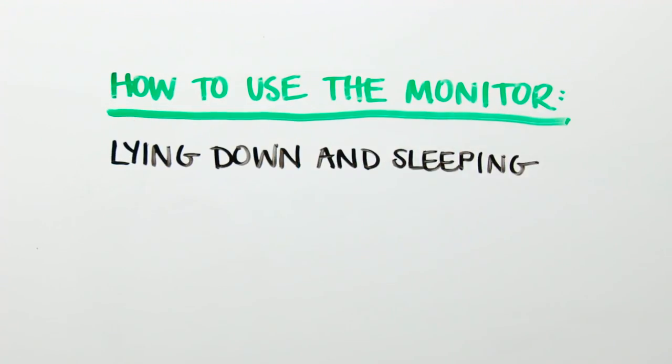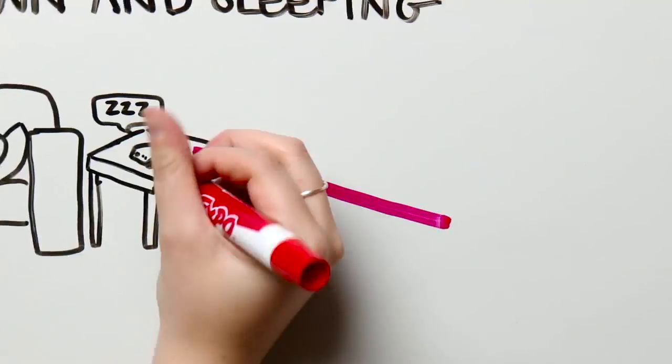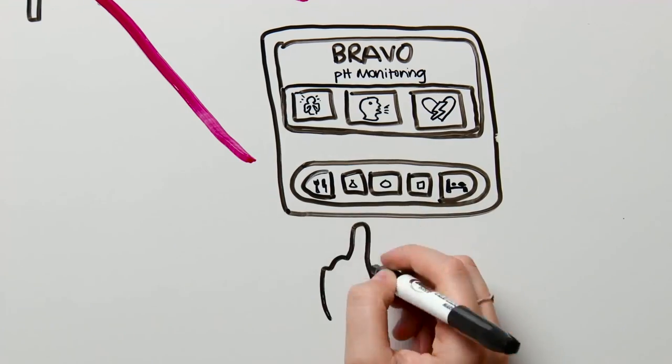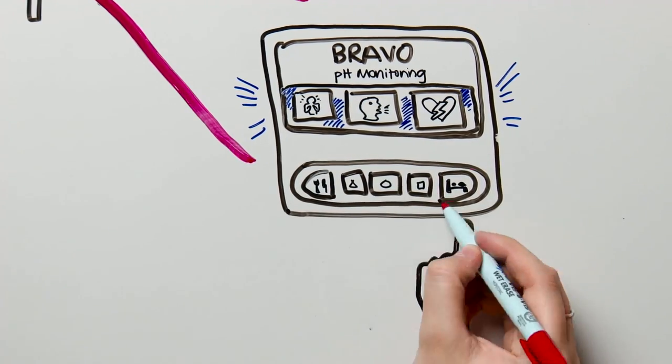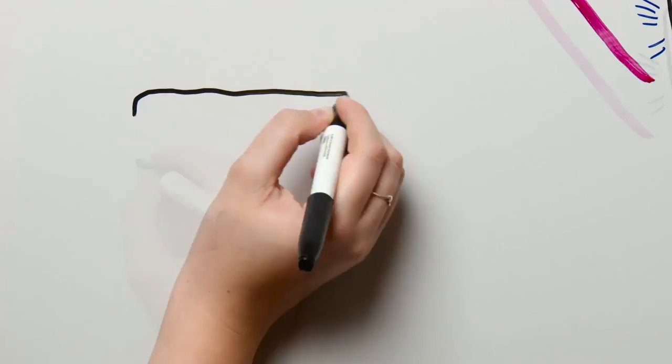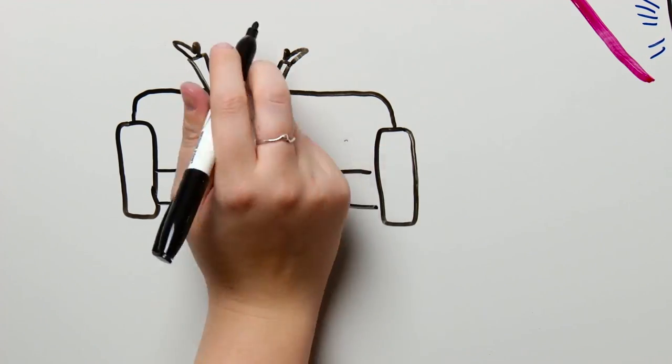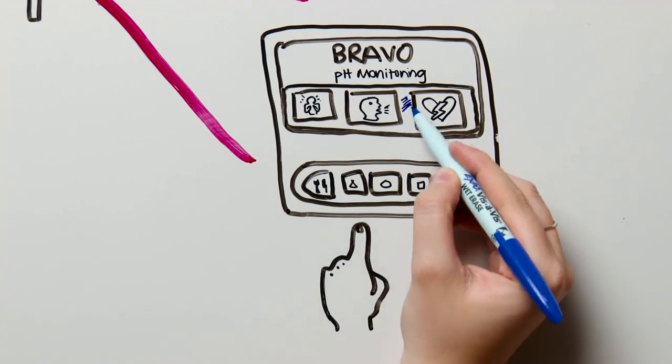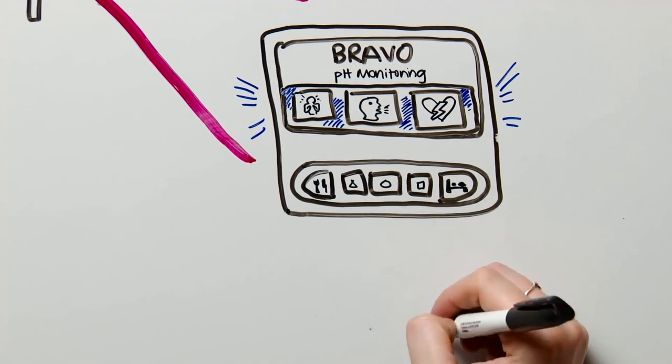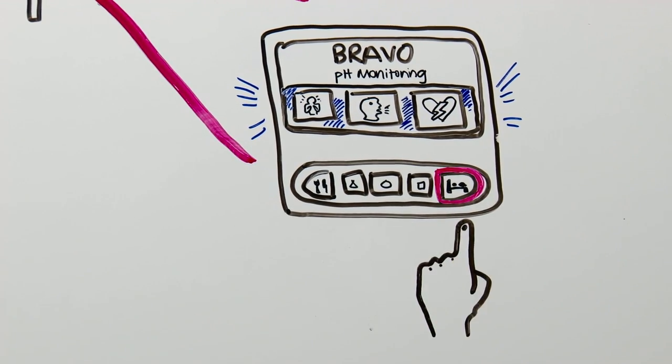The monitor works the same for lying down and sleeping. Push any button to wake up the monitor and then push the lying down button. Then go ahead and lay down. When you're ready to get up, push any button to wake up the monitor and then push the lying down button once again to complete the recording.